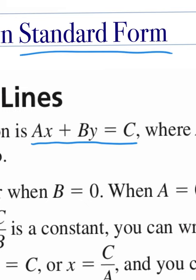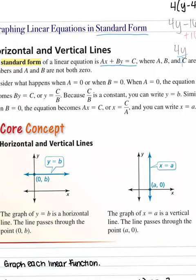What do you notice about standard form? There are two variables, x and y. There are three letters — a, b, and c — representing numbers. It's a bit like the Pythagorean theorem: a squared plus b squared equals c squared. And importantly, x and y are both on the same side — specifically the left side of your equation. That's how we recognize standard form.